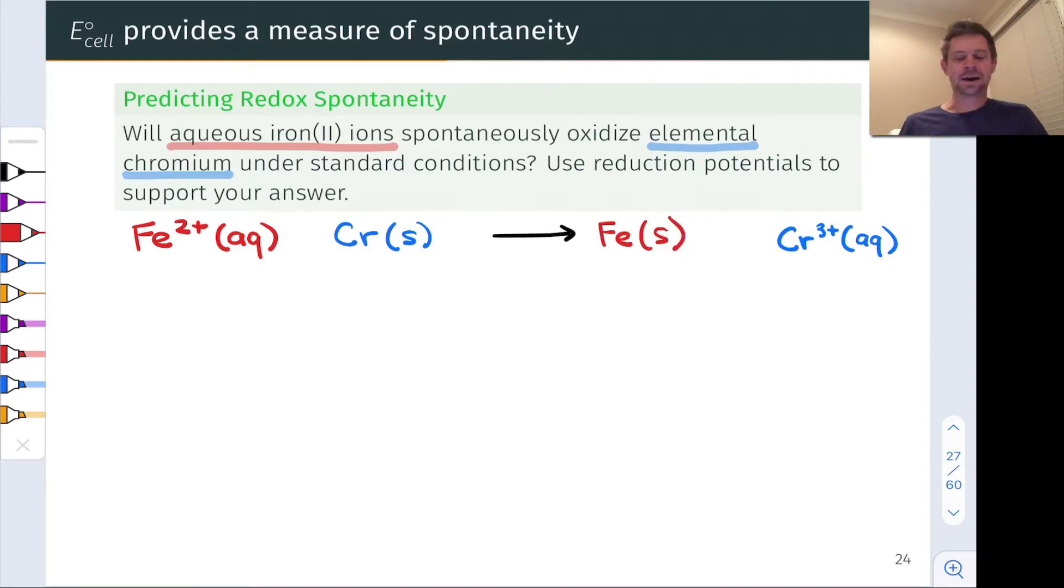So now, just to keep everything balanced here, I've got 2+ on the left and 3+ on the right. So I'm going to need two chromiums over here, and I'm going to need three irons over here and three irons over here and two chromiums over there. And now I'm all balanced up. So here is a chemical equation for the oxidation of chromium metal by Fe²⁺.